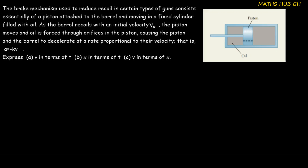So let's look at how we are going to solve this question. First, we have to express v in terms of t. We know that the expression that relates velocity and time is acceleration. So we can write acceleration equals the change in velocity per unit time, which is dv over dt. And from the question we are given that acceleration equals minus kv.